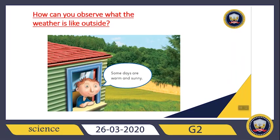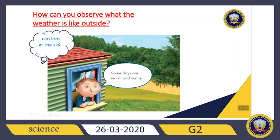How can you observe what the weather is like outside? How can we know what the weather is outside? Do you see this boy? He said some days are warm and sunny. How can we observe? How can we know the weather? I can look at the sky — sometimes I can look at the sky and know what the weather is.